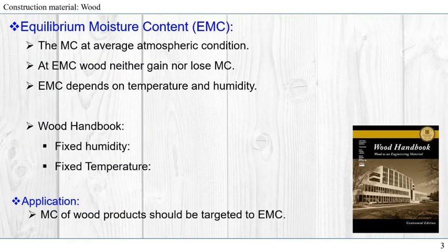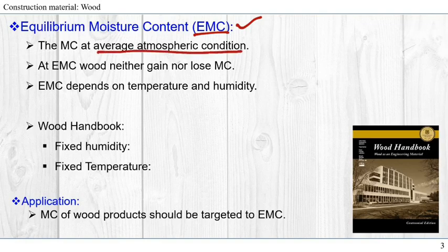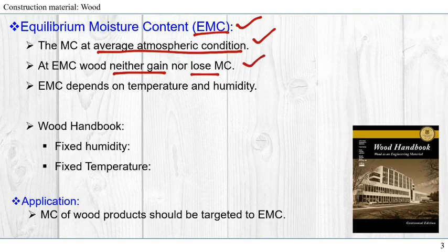Another term we need to know about when using, designing, or developing wood products is equilibrium moisture content, EMC. The moisture content at average atmospheric conditions is called equilibrium moisture content. If a wood attains its EMC, the wood will neither gain nor lose moisture content, so it will be stable. It will not shrink, lose weight, gain weight, or swell over time.